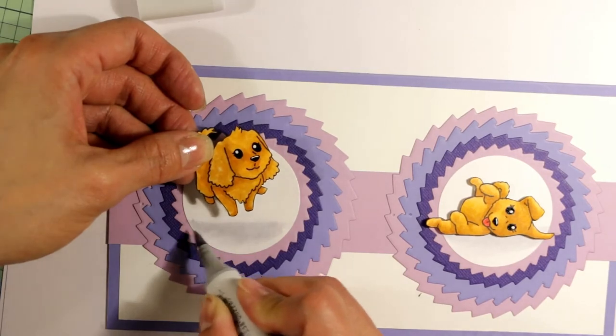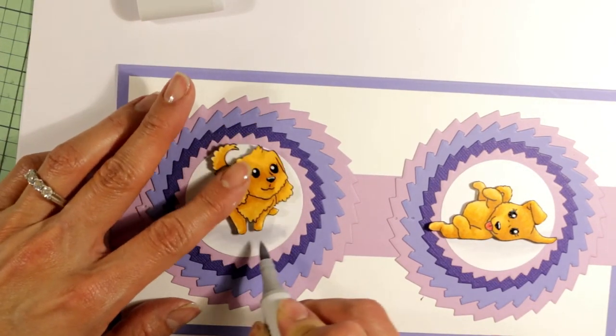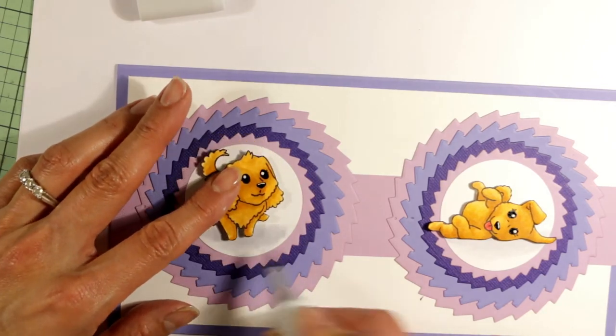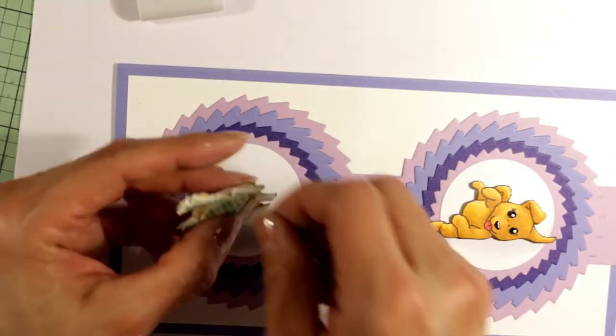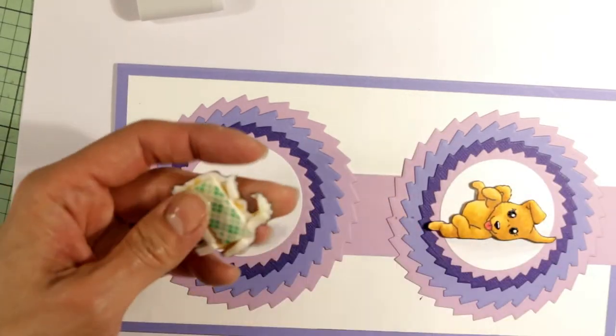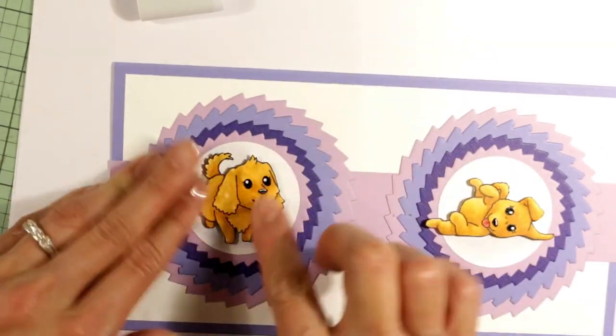I'm going to use more double-sided foam adhesive for that standing puppy. I just wanted to get a smooth finish to that ground there. I'm taking off the release paper of that double-sided foam adhesive behind that puppy and placing that in the second circle.